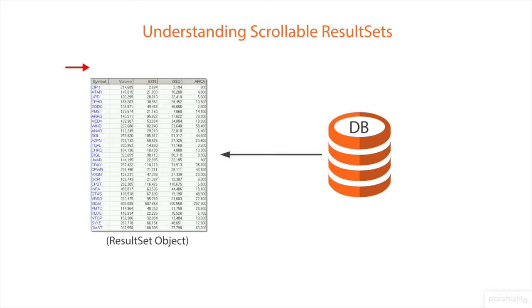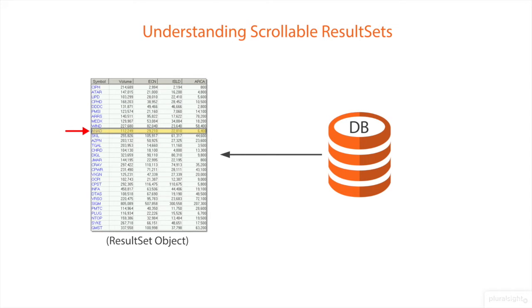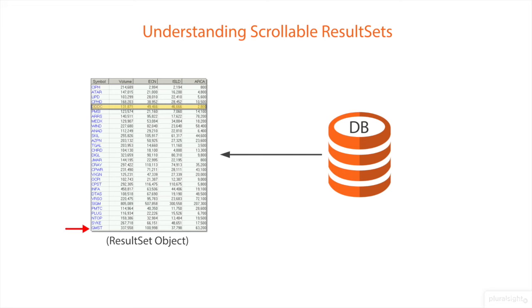Now if we wanted to move the cursor to the first row and read all the values present at that row, and then if we wanted to move the cursor to the 10th row and read those values, and if we wanted to move back to the fifth row and read that row's values, then the result set should be scrollable in forward and backward directions. The cursor is movable based on the properties of the result set.